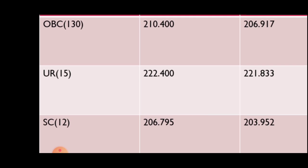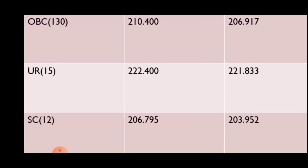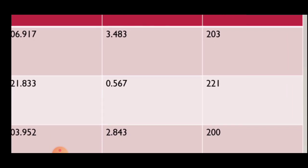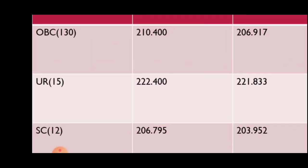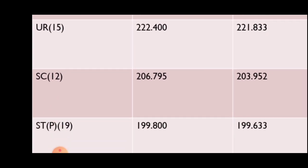For SC — 12 posts — the first provisional merit list is 206.795 and the second provisional merit list is 203.952. The difference is 2.84, so the expected cutoff is 200. For the third provisional merit list, the first provisional merit list figure is 199.800 and the second provisional merit list is 199.63.